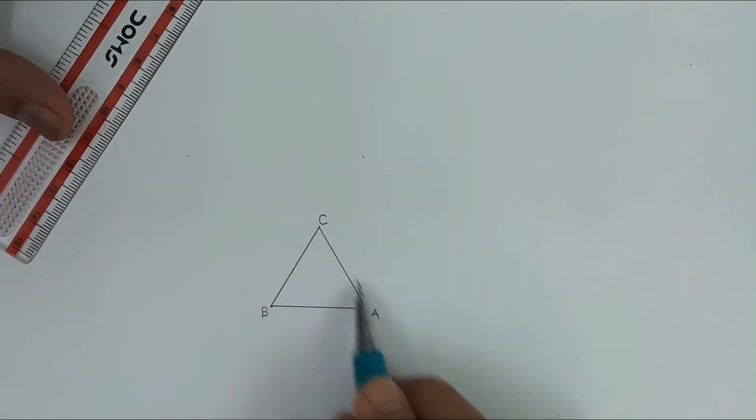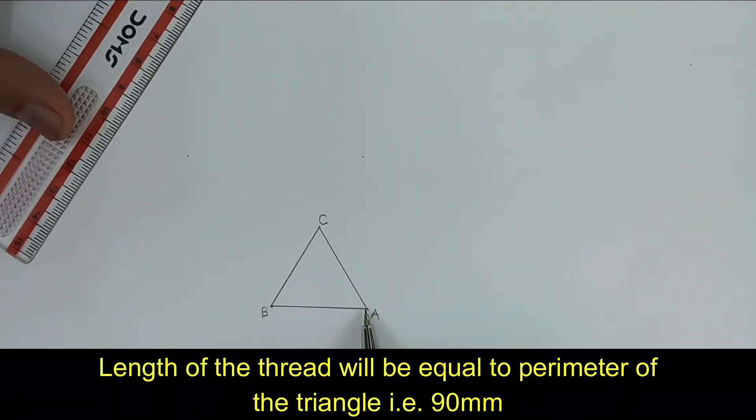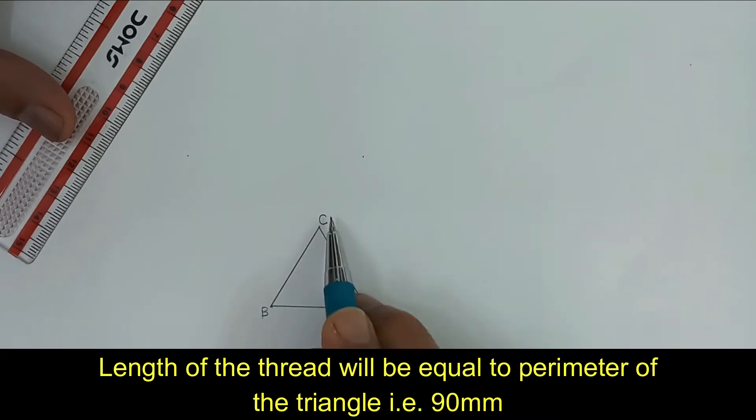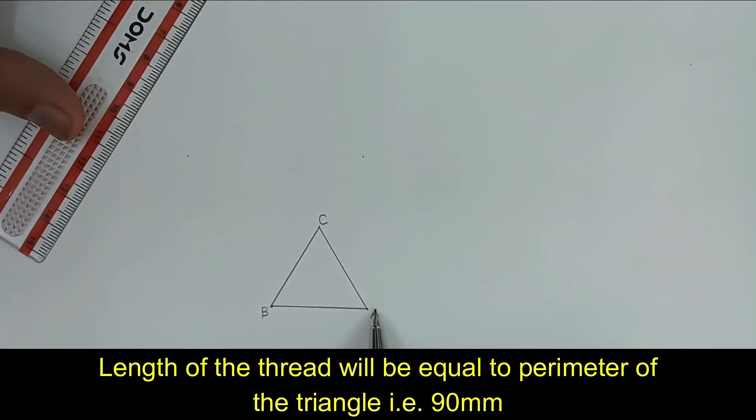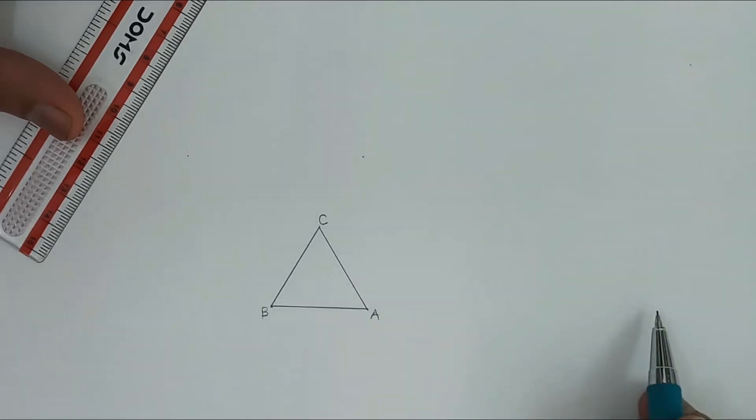So in this case involute of this triangle will have its maximum length equal to perimeter of the triangle, that is 30, 30, 30, total 90 mm will be the perimeter of the triangle. So length of that particular thread will be 90 mm.